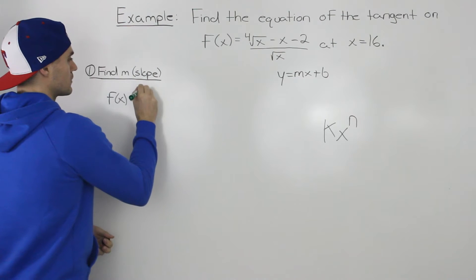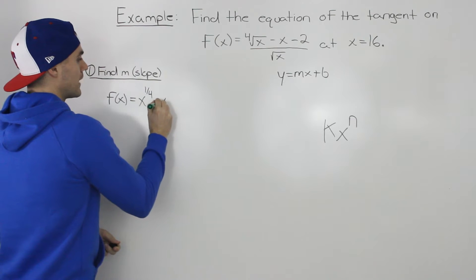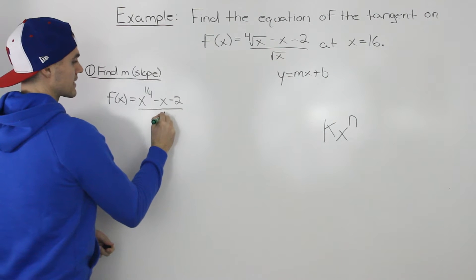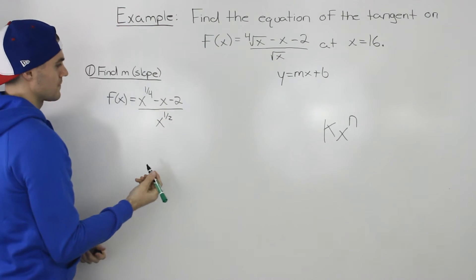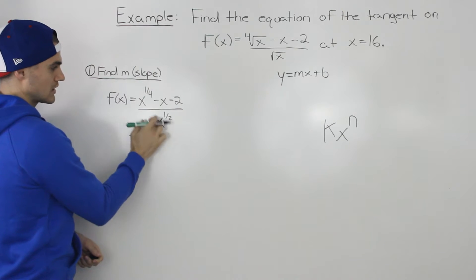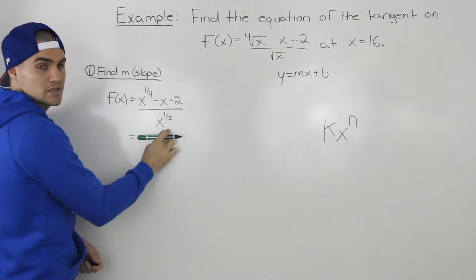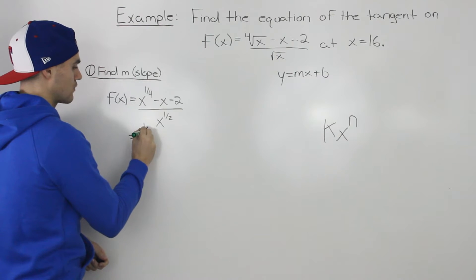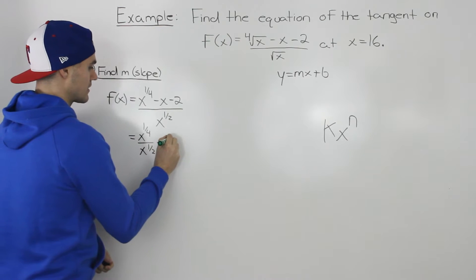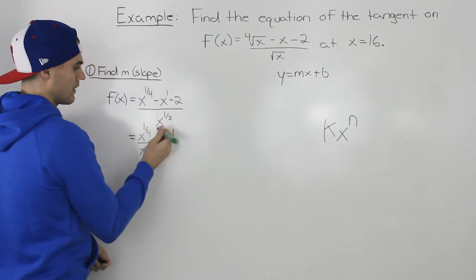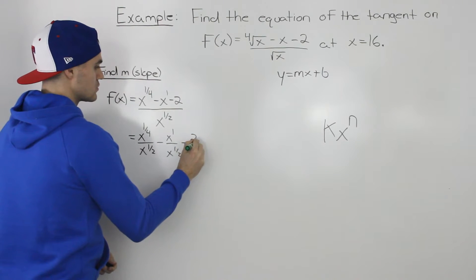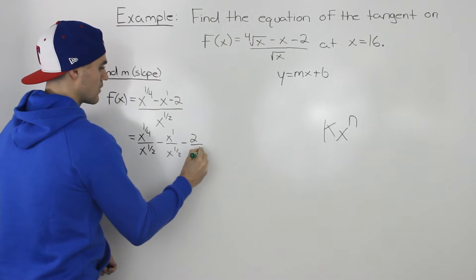The fourth root of x we rewrite as x to the power of 1 over 4, minus x minus 2, and the square root of x we rewrite as x to the power of a half. Then we can split up this fraction into three separate fractions with that same common denominator: x to the 1/4 over x to the 1/2, minus x to the power of 1 over x to the 1/2, minus 2 over x to the 1/2.